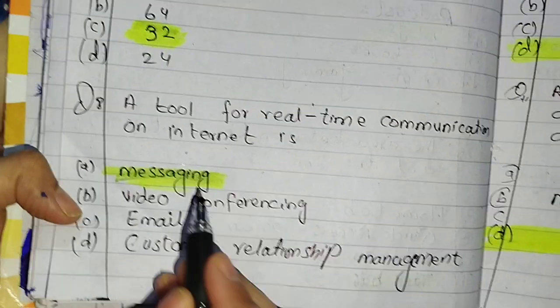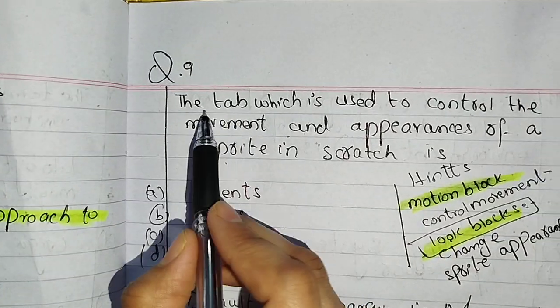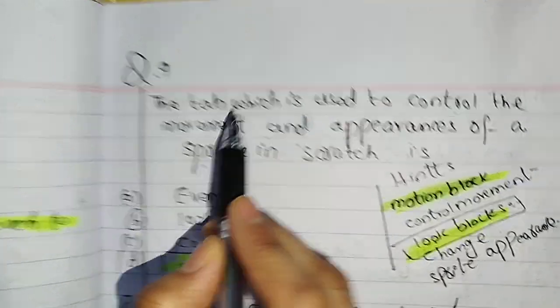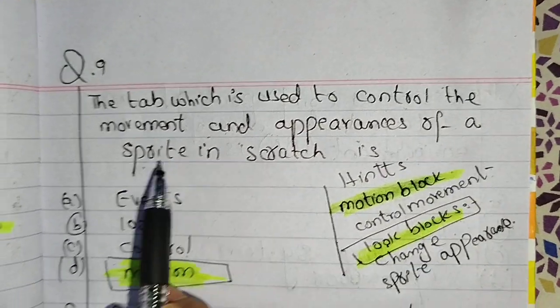This is the tool of real-time communication on the internet. This is messaging. People can chat. This is the tool of real-time communication.